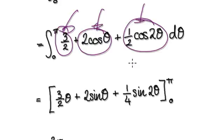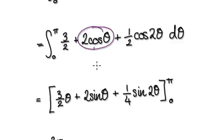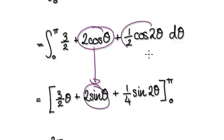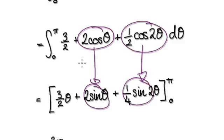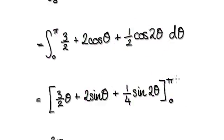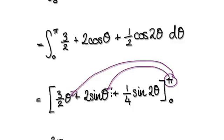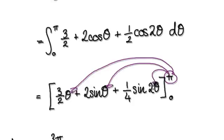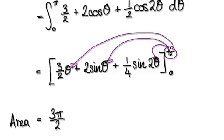Integrate each term: integrating this gives you this, integrating this gives you this. Don't forget it's evaluated from 0 to pi. So now put pi into each term.